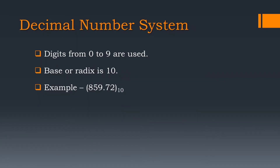Then comes decimal number system. In this system, digits from 0 to 9 are used. So the total number of digits is 10, and hence the base of this number system is also 10. For example, 859.72.